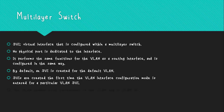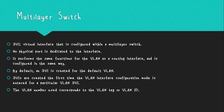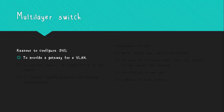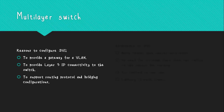SVIs are created the first time the VLAN interface configuration mode is entered for a particular VLAN SVI, using the command 'interface vlan' followed by the VLAN ID. An SVI can be created for any VLAN that exists on the switch. The VLAN number used corresponds to the VLAN tag associated with data frames on an 802.1Q encapsulated trunk, or the VLAN ID configured for an access port. SVIs are configured to provide a gateway for a VLAN so traffic can be routed in or out, to provide Layer 3 IP connectivity to the switch, and to support routing protocols and bridging configurations.